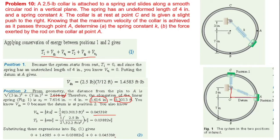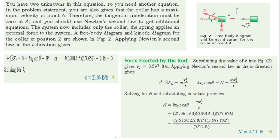At point A, since maximum velocity occurs, tangential acceleration is zero. We analyze forces in the normal direction: the spring force and weight both have components. The spring force F_s and weight W act downward, contributing to the normal direction. The normal force N from the rod and the centripetal acceleration give us the equation for the normal component.